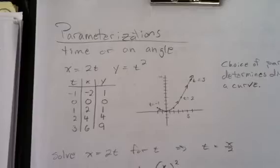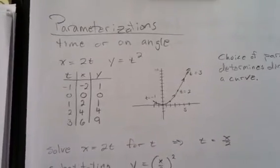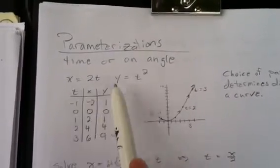So x moves according to twice the time, and y moves according to the time squared, is what I have in my equations here.